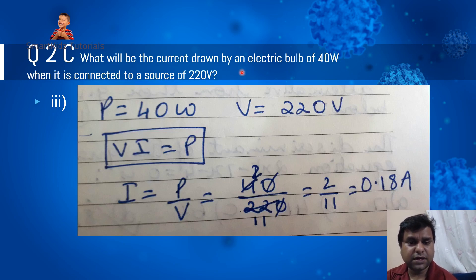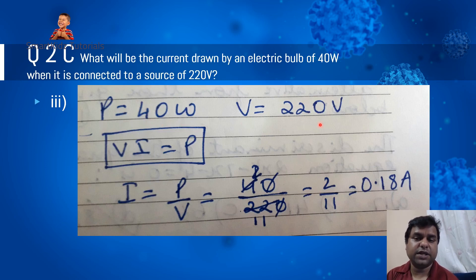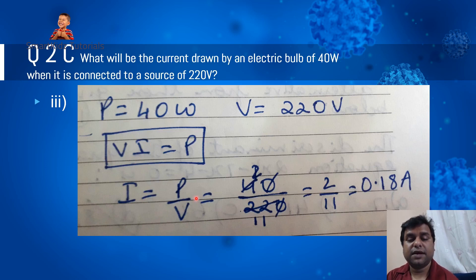Question 2C problem 3: what will be the current drawn by an electric bulb of 40 watts when connected to a source of 220 volts? Using the formula P = VI, so I = P/V = 40/220 = 0.18 amps. That is the current drawn by the electric bulb.